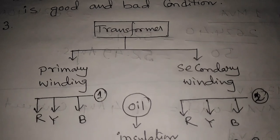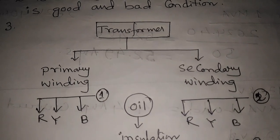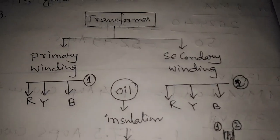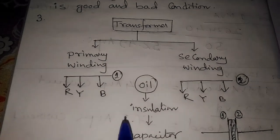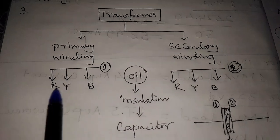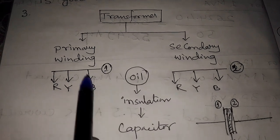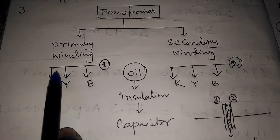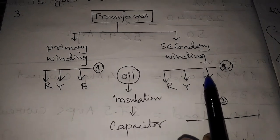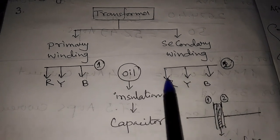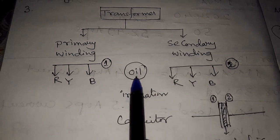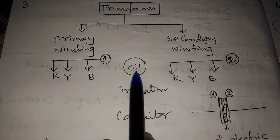A transformer has two windings — one is primary and the other is secondary. In the primary side we have three windings: R, Y, B. On the secondary side also there are three connections: R, Y, B. In between the first conductor and second conductors, oil is present in the transformer.